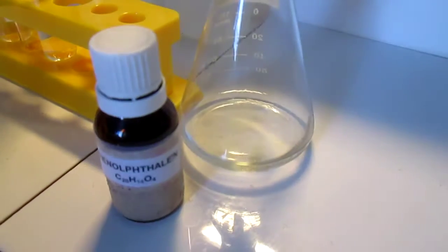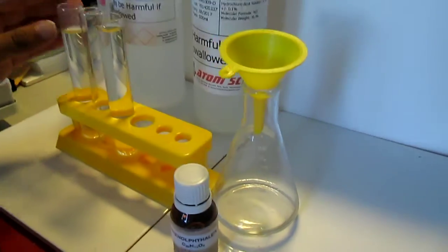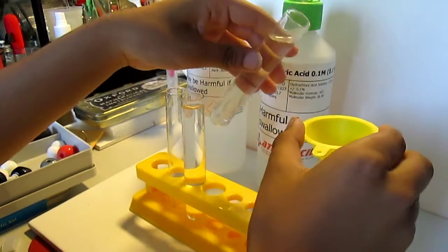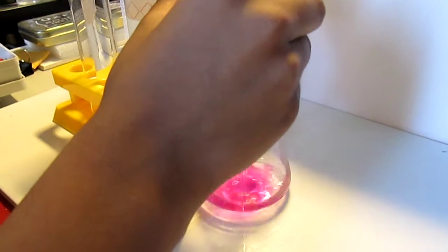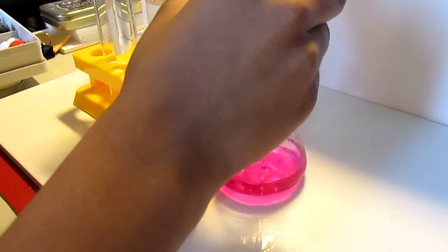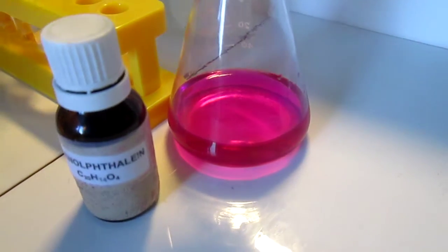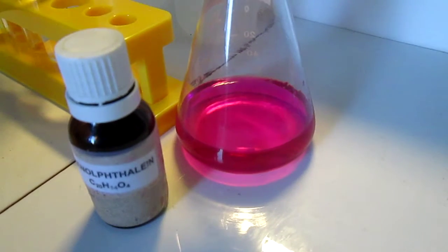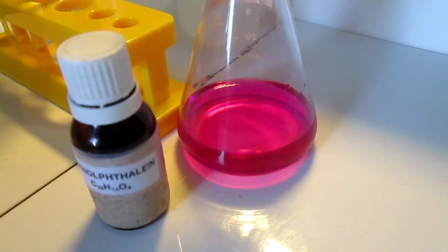We then pour a little phenolphthalein into the flask. You can see that the solution immediately turns pink. Phenolphthalein turns pink in alkaline solutions.